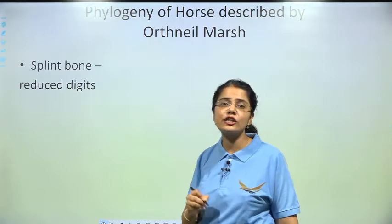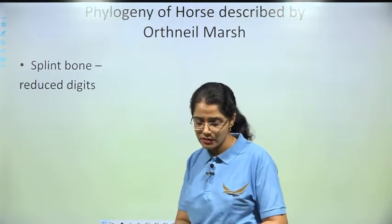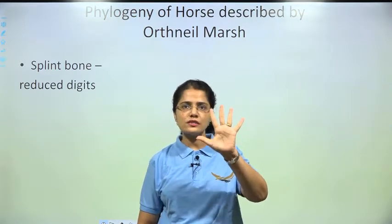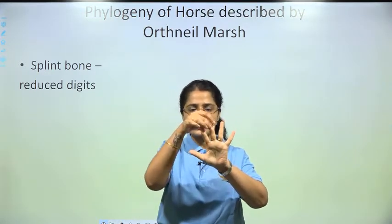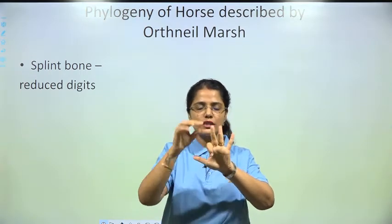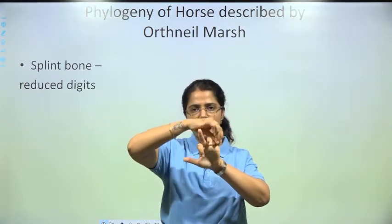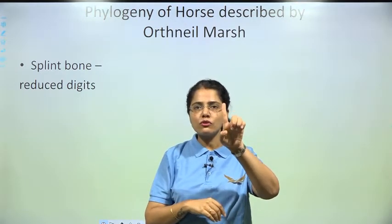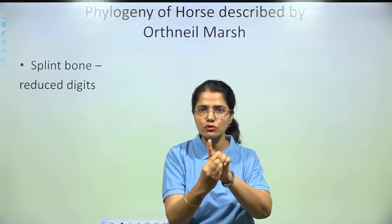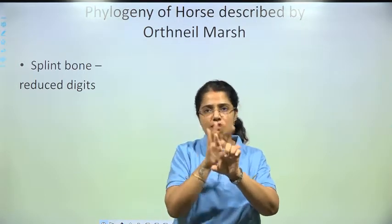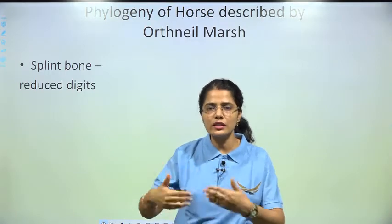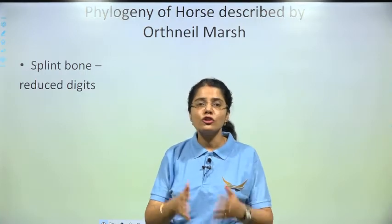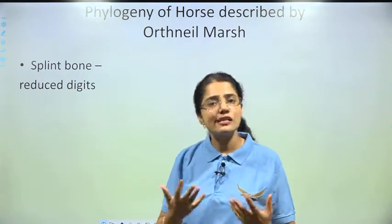Splint bone means a reduced digit. Just like we have five fingers, if some of them reduce in size while others remain longer, the reduced ones are called splint bones. In the evolution of horse, the side digits kept reducing while the central one remained long.